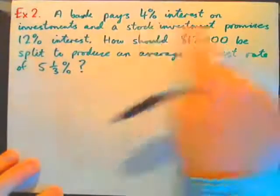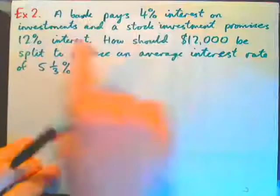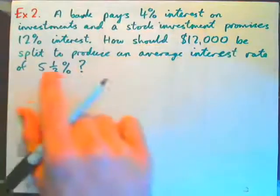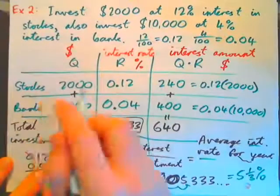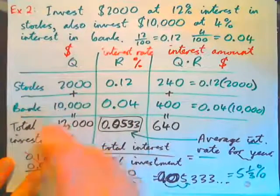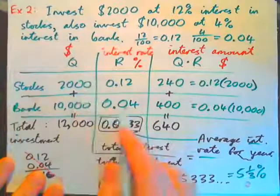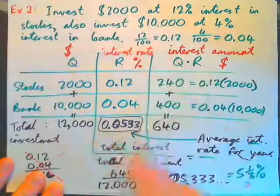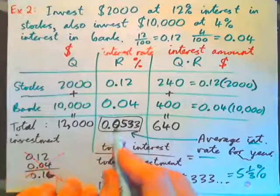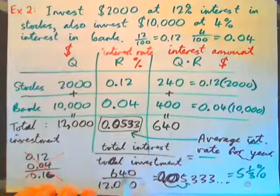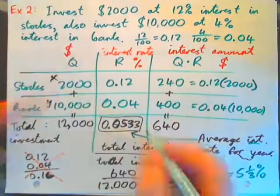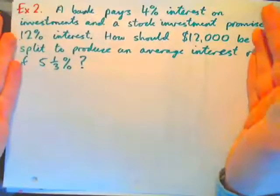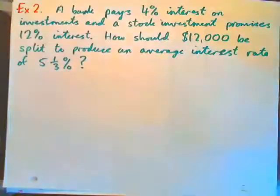Example 2: a bank pays 4% interest on investments and a stock investment promises 12% interest. How should $12,000 be split to produce an average interest rate of 5 and a third percent? We know the answer: invest $2,000 in stocks and $10,000 in the bank, giving a total of $12,000 at an average rate of 5 and a third percent. But we need to find these values algebraically, calling them X and Y.